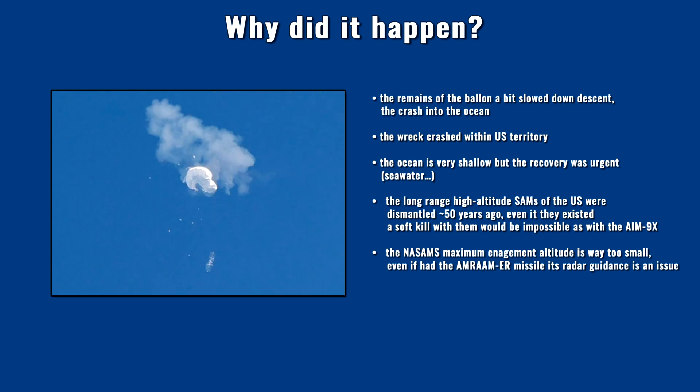The long-range, high-altitude surface-to-air missiles in the US were dismantled in the early 1970s. Therefore, it was not possible to shoot down the balloon with a SAM, since no such system exists in the arsenal of the US National Guard. Even if such a system had existed — which is today completely obsolete — they were built around only some large cities, and were far from covering the entire country.